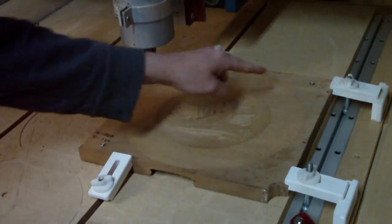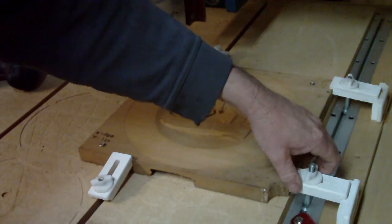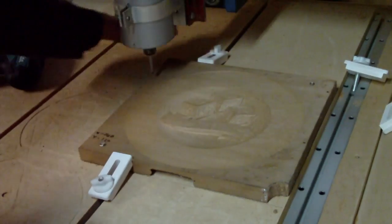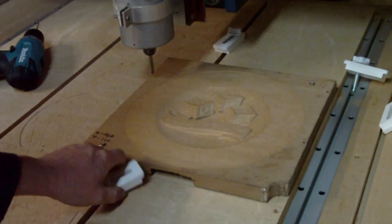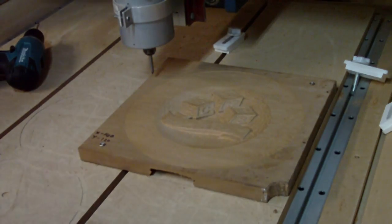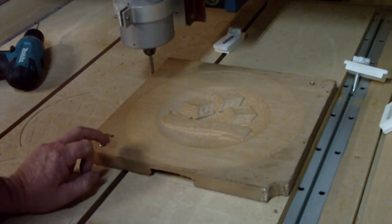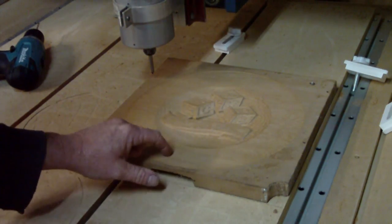It's now attached in two places here and here, that will be sufficient. I can now remove my clamps and get them out of the way. Once I've done the lasering job, I will put my clamps back on and do the final cut to cut this out.